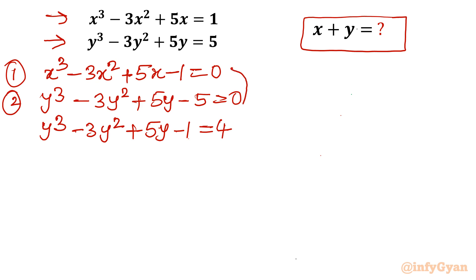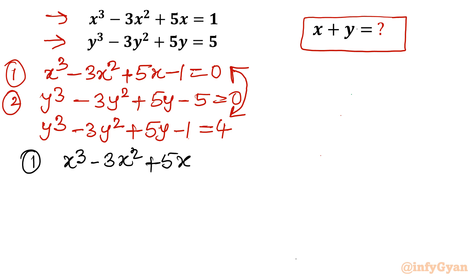Now you can see the analogy between these two equations — the left-hand side is identically the same except for the variable: x in equation 1, y in equation 2. So what I am going to do is solve equation number 1. I will write x³ - 3x² + 5x - 1 = 0.